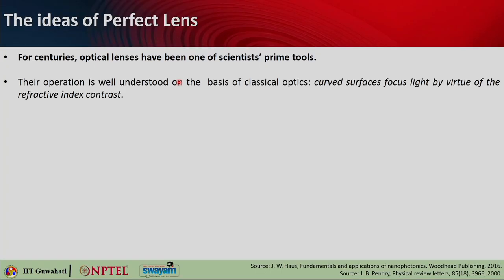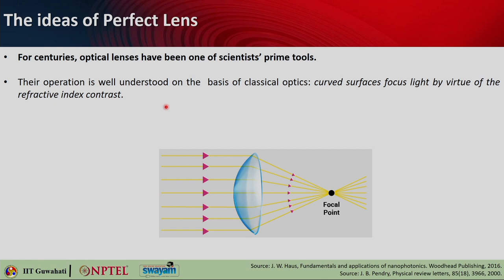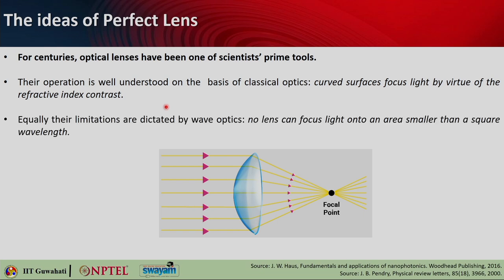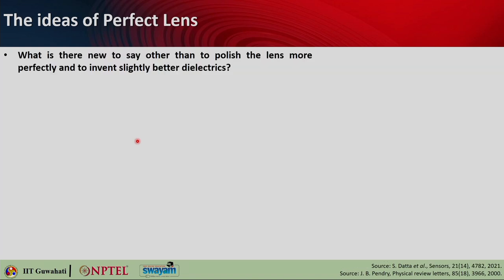For centuries, optical lenses have been one of the prime tools of scientists. They allow us to look at very tiny objects by focusing light to image them. Their operation is well understood on the basis of classical optics - a curved surface helps us focus light by virtue of refractive index contrast. Equally, their limitations are dictated by wave optics: no lens can focus light onto an area smaller than a square wavelength. If two objects are separated by a gap less than lambda/2, you will not be able to resolve them.